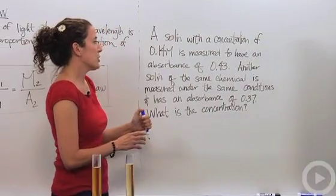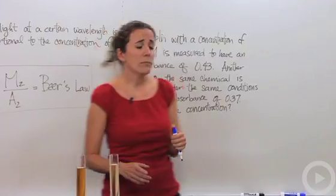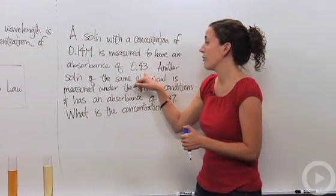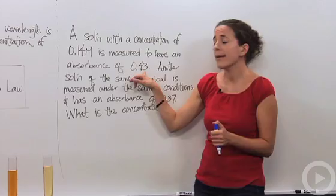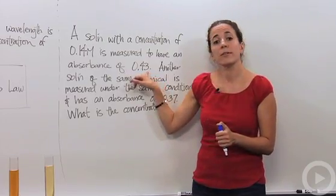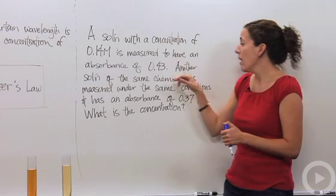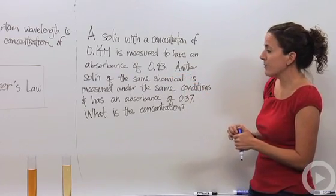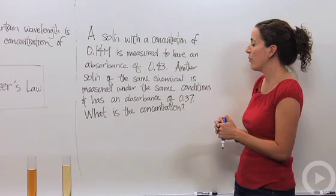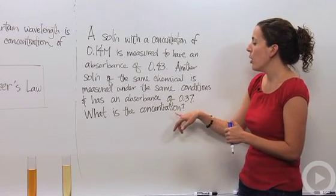So let's say we have a solution with a concentration of 0.14 molar. It's measured to have an absorbance of 0.43. What that 0.43 is indicating is that it absorbs 43% of the light at that particular wavelength. Another solution of the same chemical is measured under the same conditions and has absorbance of 0.37, 37%. What is the concentration?